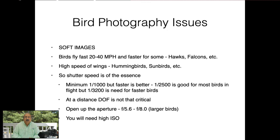One of the biggest factors in wildlife photography, particularly with birds, is soft images. Birds fly very fast — 20 to 40 miles per hour, and faster for hawks, falcons, and osprey when they close their wings to dive. The speed of a hummingbird or sunbird's wings is incredibly fast. Shutter speed is of the essence: 1/1000th of a second will be fine in most cases, but for smaller fast-winged birds or diving birds, you need at least 1/2500, 1/3000, or 1/3200.